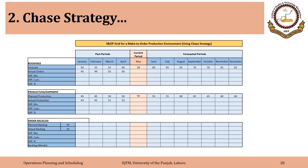This is a typical SNOP grid for a make-to-order production environment using chase strategy. In the make-to-stock case, we had the forecast; here we have bookings, but the basic idea is the same — what we have as forecast and what we have as actual orders. Similarly, the second part of the grid covers actual versus planned production, where we can calculate the difference.